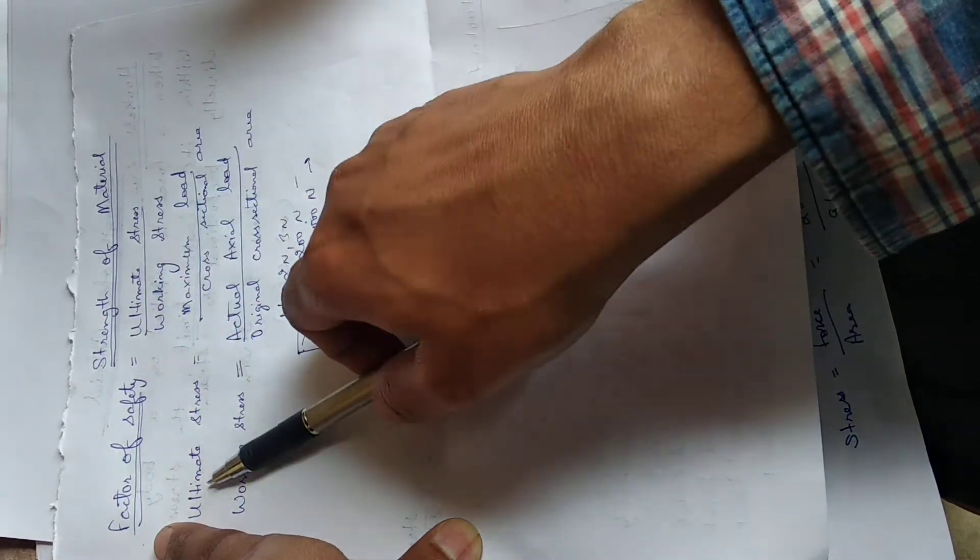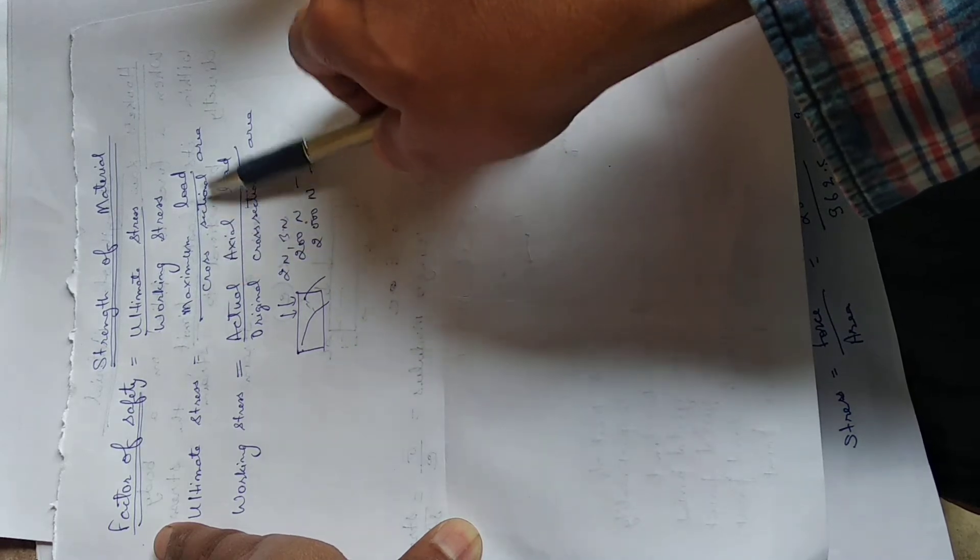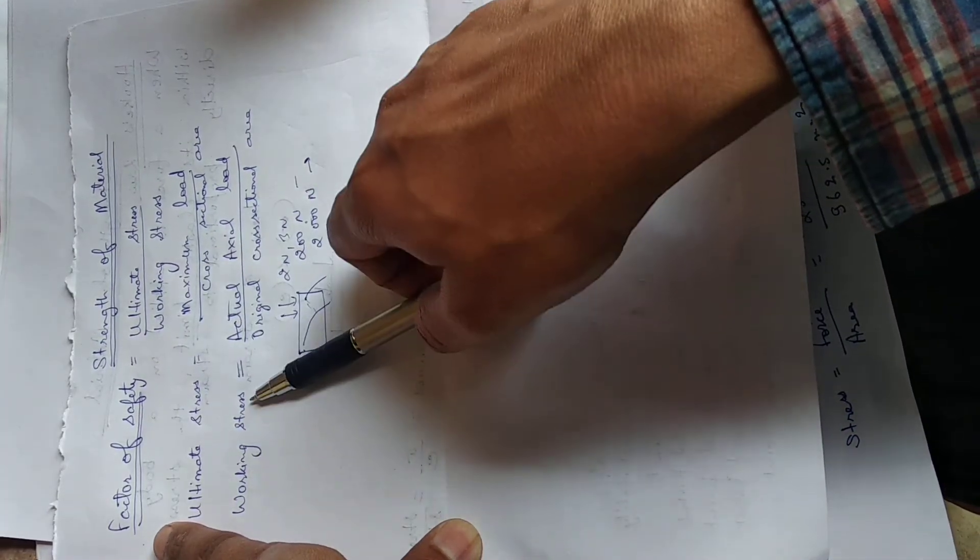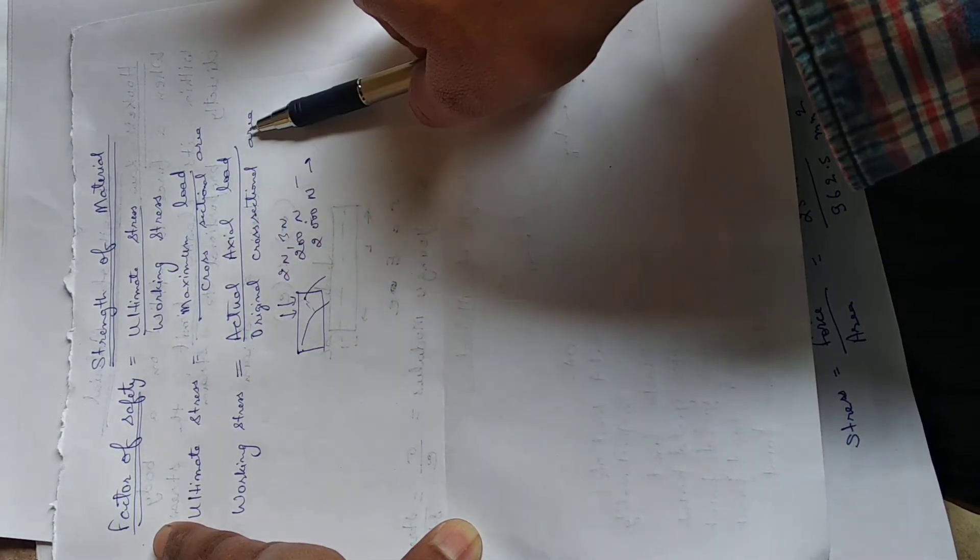Ultimate stress is maximum load upon cross-sectional area. And what is working stress? Working stress is equal to actual axial load divided by original cross-sectional area.